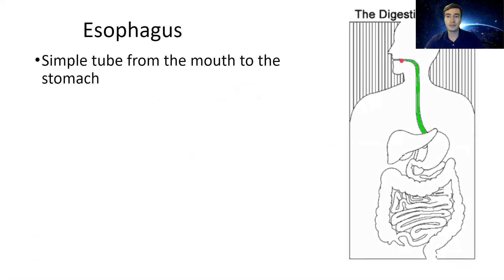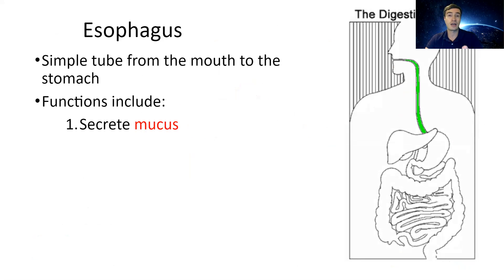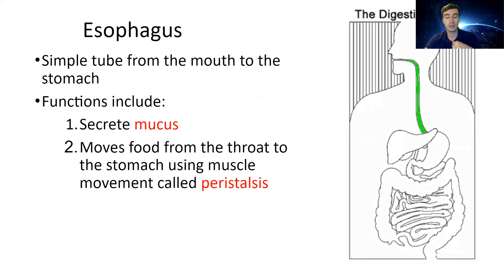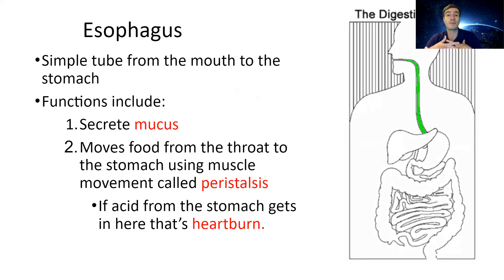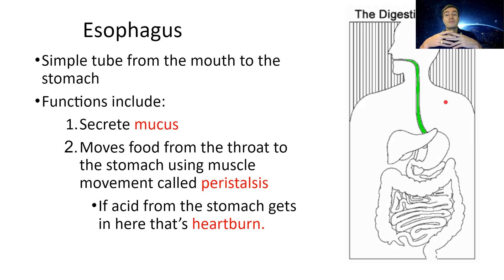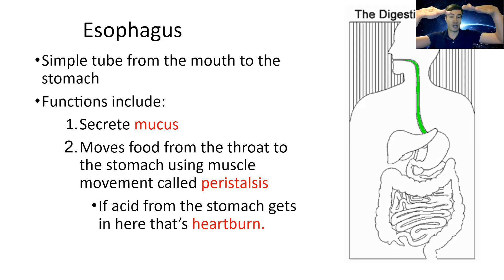Your esophagus is literally just a tube made out of muscle. It has some mucus to help coat the food and get it ready to pass into the stomach, and it moves food from your throat to your stomach. When people talk about heartburn — feeling like your chest is on fire — that's what happens when stomach acid accidentally goes up the esophagus. The esophagus doesn't break down any food or absorb any nutrients; it's literally just a tube from top to bottom.